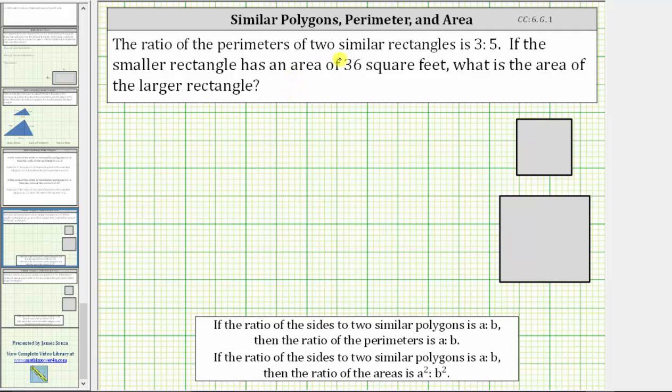The ratio of the perimeters of two similar rectangles is three to five. If the smaller rectangle has an area of 36 square feet, what is the area of the larger rectangle?